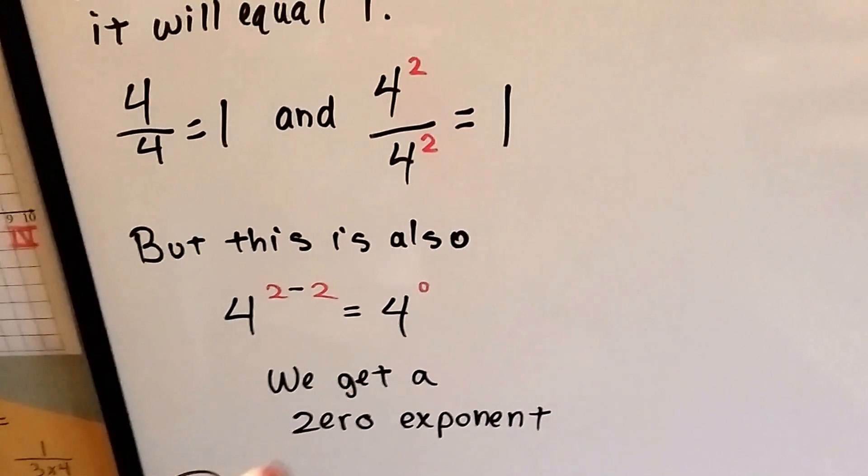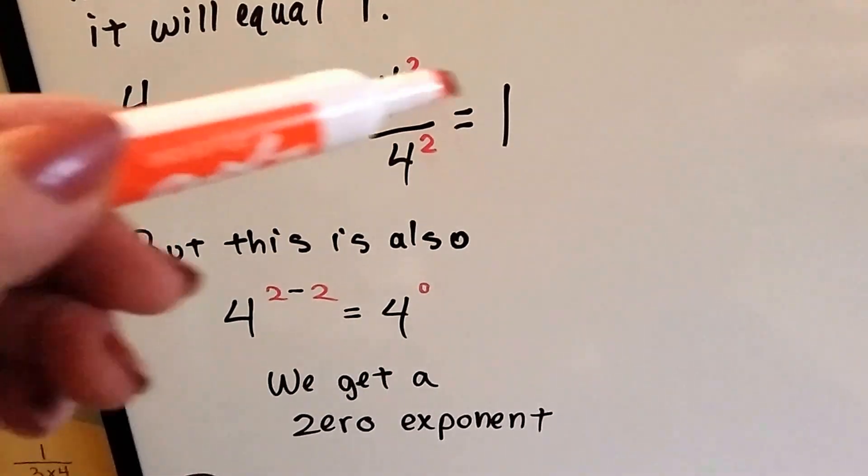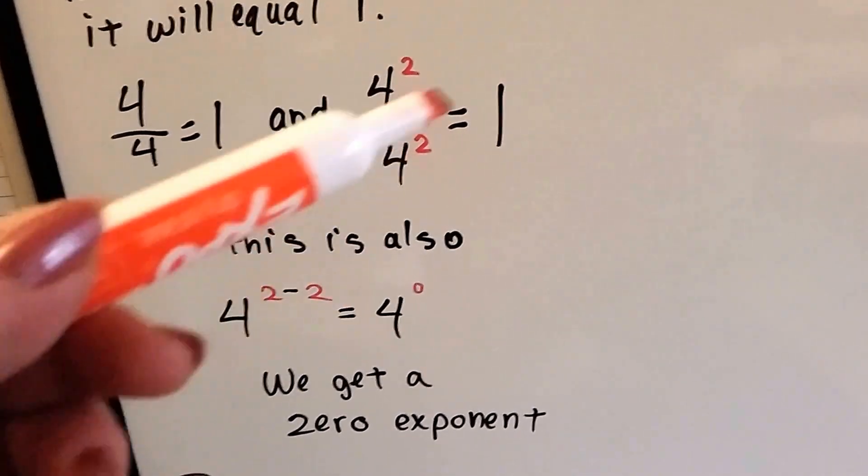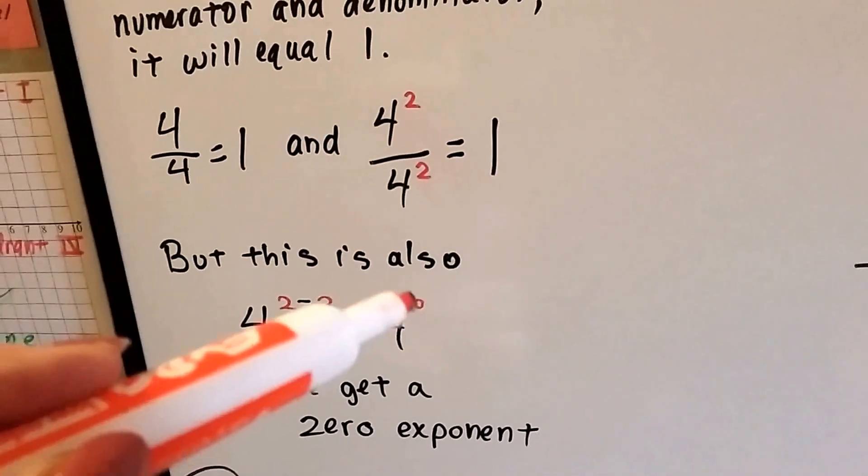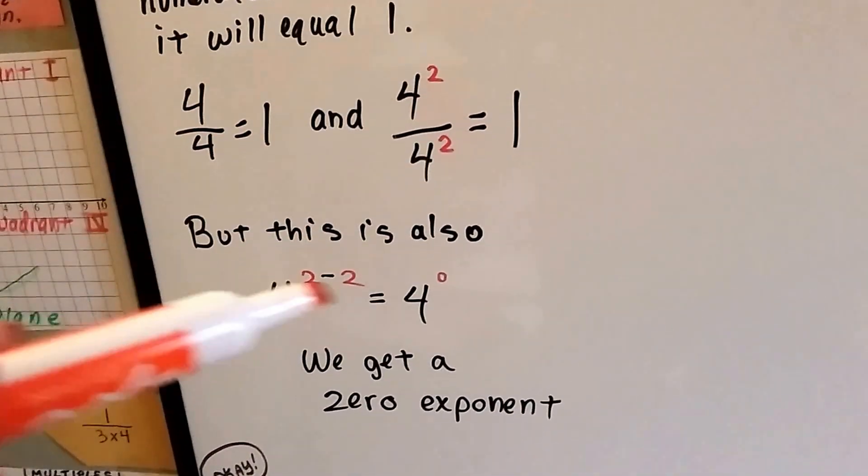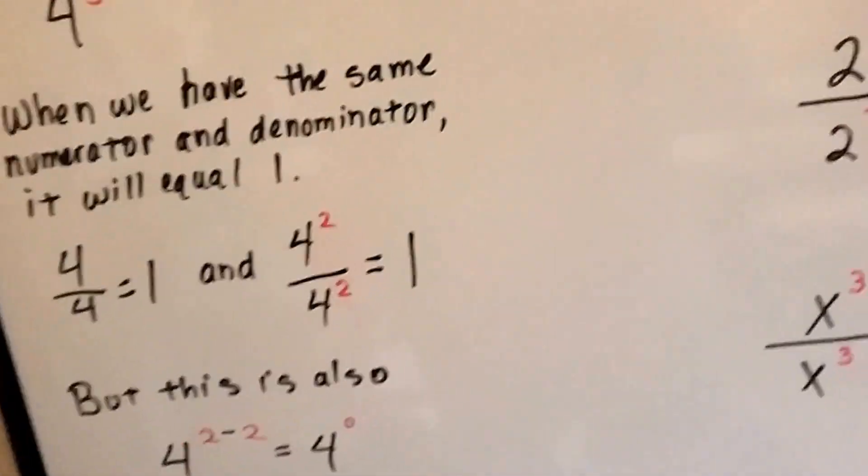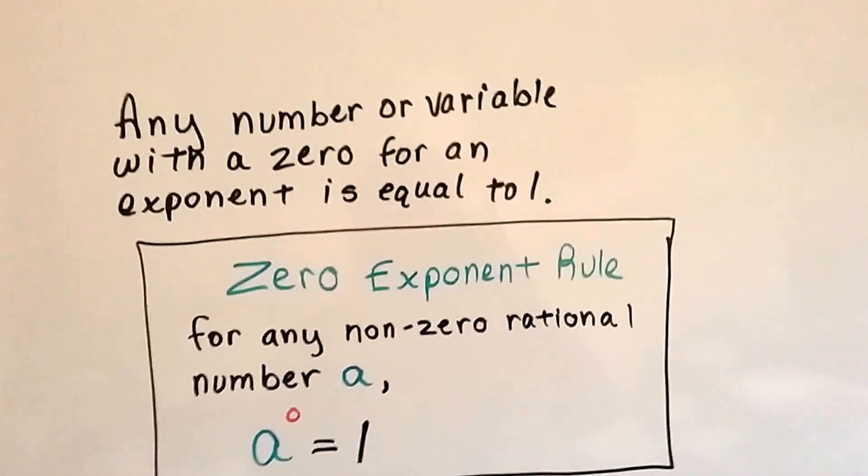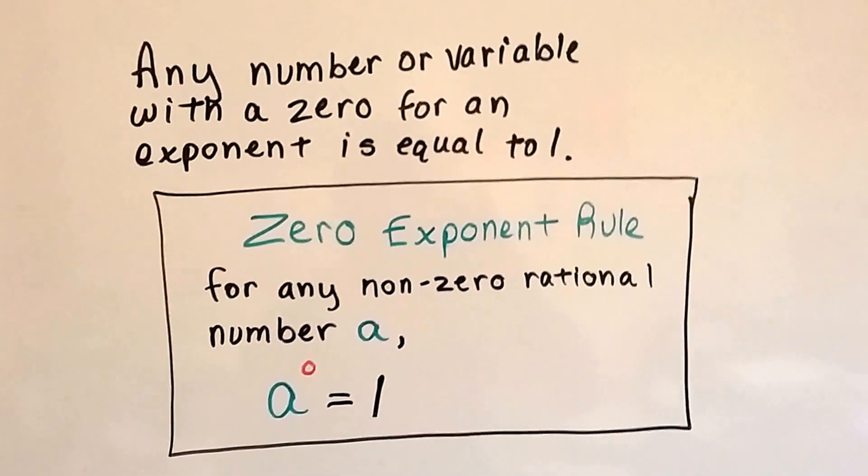Whenever we have a zero exponent on any number or variable, it equals 1. It doesn't equal itself. It equals 1. If there was a little 1 here, it would be 4. But zero exponent, it equals 1. So any number or variable with a zero for an exponent is equal to 1. That's the zero exponent rule.